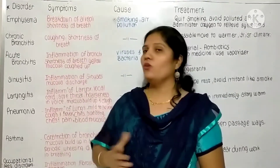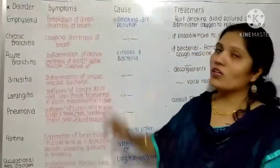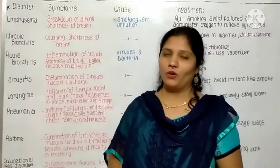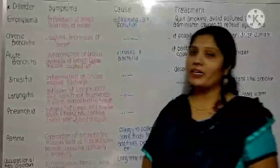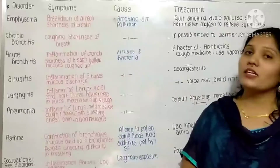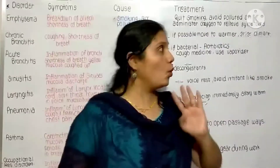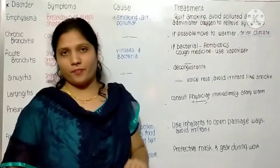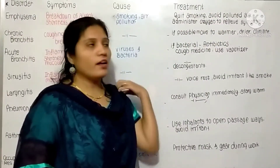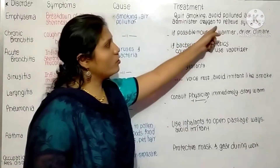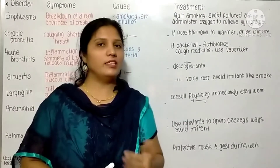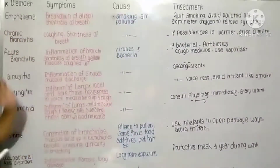There is also continuous coughing. The causes of Emphysema include smoking and air pollution. For treatment, the person has to quit smoking and avoid polluted air. If possible, administer oxygen to relieve the symptoms — meaning taking more and more oxygen inside the body.